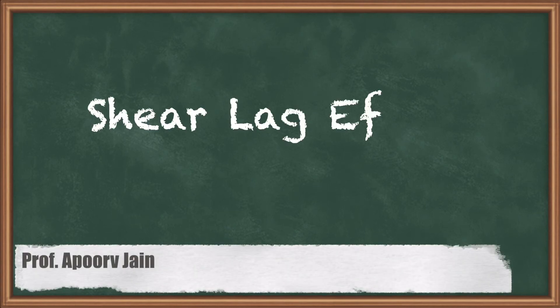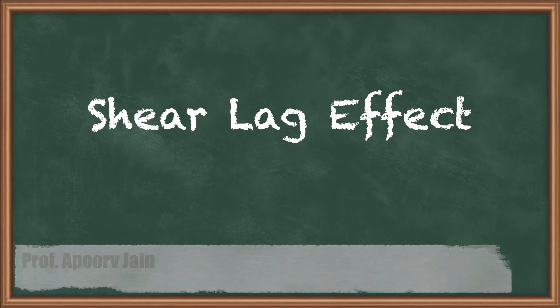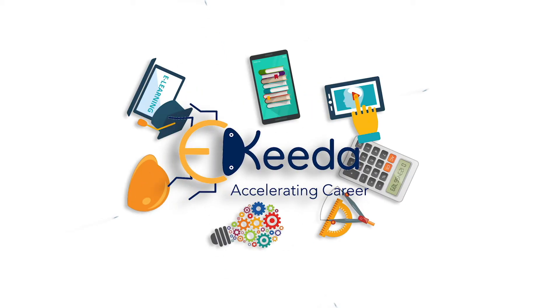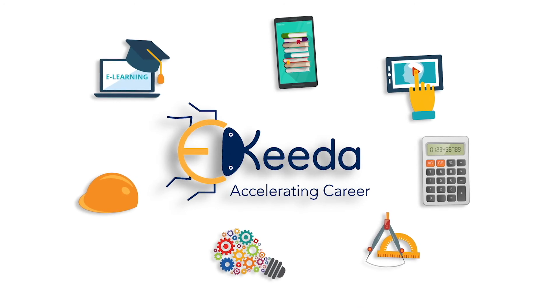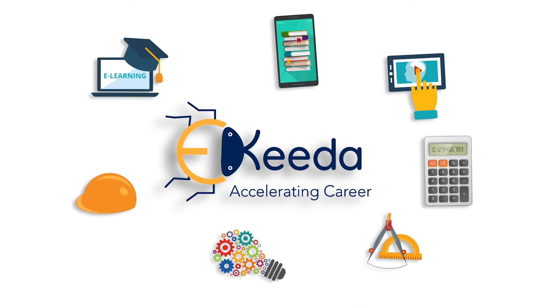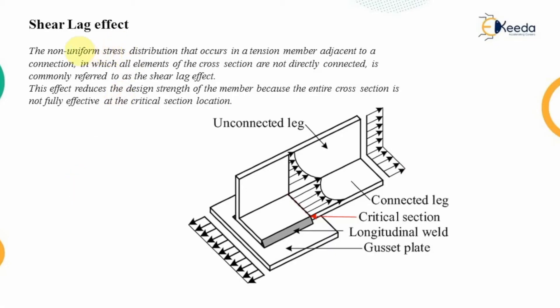Hello everyone. In this video we are going to study about the shear lag effect, which is prominent in the case of tension members and beams subjected to tensile forces. The shear lag effect is the non-uniform stress distribution that occurs in a tension member or beams subjected to tensile forces adjacent to a connection.